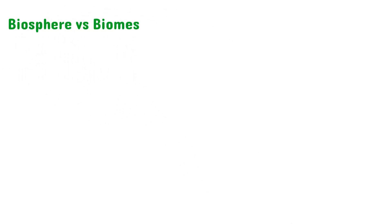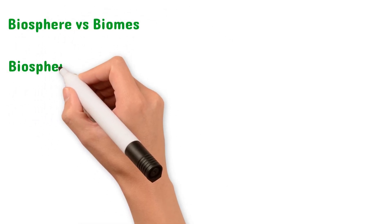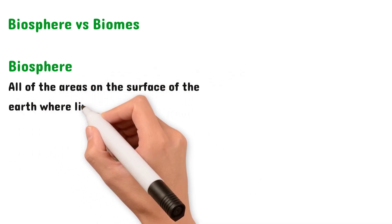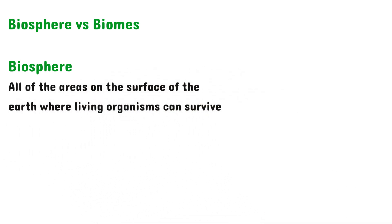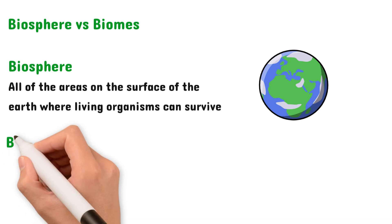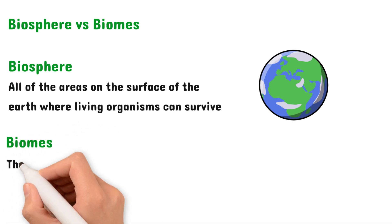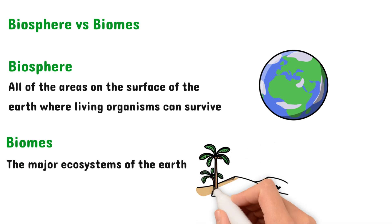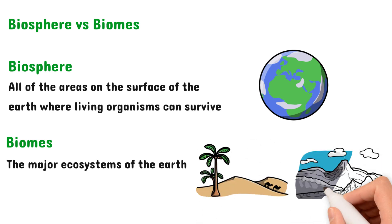And to finish off, we're going to look at the difference between biosphere and biomes. So the biosphere is defined as all the areas on the surface of the earth where living organisms can survive, and the biomes are the major ecosystems of the earth. So some examples can be the desert, high mountains, tropical rainforests, and even polar ice.